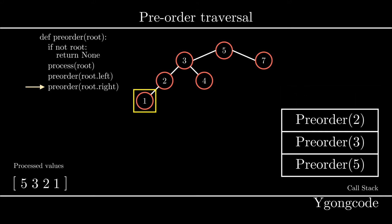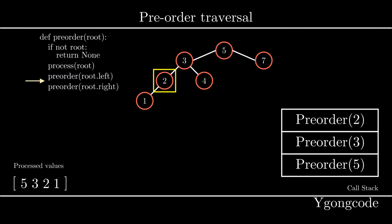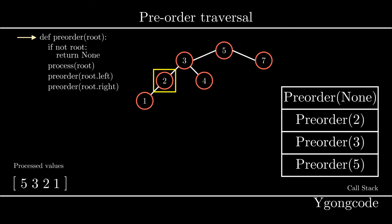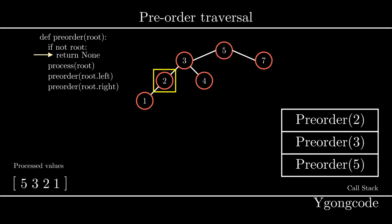So we pop pre-order 1 off the call stack and start executing the next one, pre-order 2. At pre-order 2, we exit out of its recursive call to the left subtree, so now we will traverse the right subtree, which is nothing. Still, we push this onto the call stack. Since pre-order of none returns, we remove this from the stack and go back to pre-order 2, which also returns. So we're now back to 3.